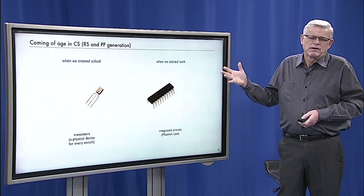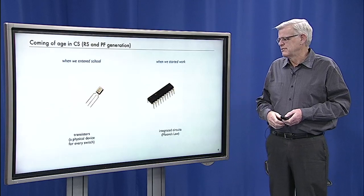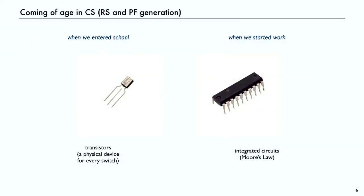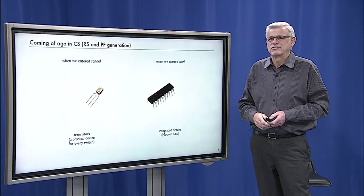With respect to technology, there were huge changes. When we started school, computers were big, expensive, rare. There were physical devices for every switch or for every bit. But not that much longer when we started research and teaching, we had integrated circuits. And computers were becoming ubiquitous and fast and cheap.